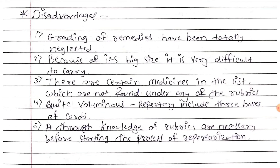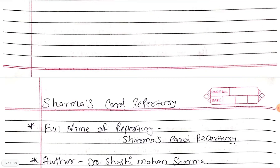Disadvantages: grading of remedies has been totally neglected. Because of its big size, it is very difficult to carry and to use by bedside. There are certain medicines in the list which are not found under any of the rubrics. Quite voluminous — the repertory includes three boxes of cards. A thorough knowledge of rubrics is necessary before starting the process of repertorization, which is lacking in this card repertory.